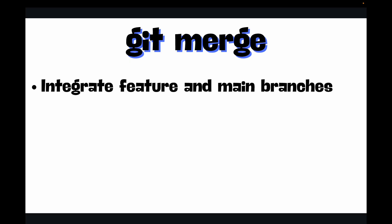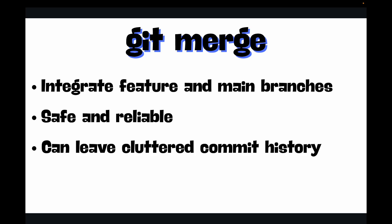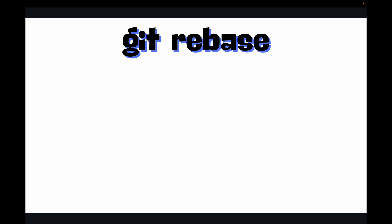Hello and welcome back. In our journey so far, we have primarily used git merge to integrate our feature branches — like merging changes from the feature branch to the main branch. This command is safe and reliable, but it can also leave your commit history looking a bit cluttered with merge commits. Today we are diving into a command that professional developers use to maintain a clean, linear, and beautiful commit history: git rebase.